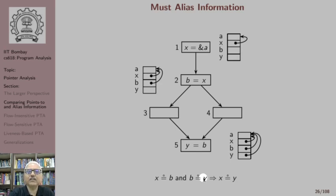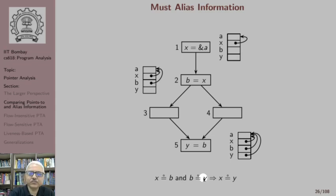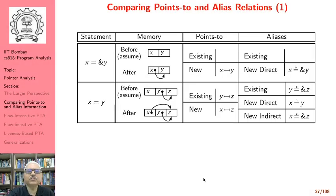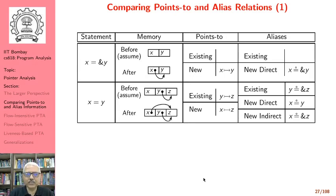The transitivity issue does not arise for points-to information regardless of whether it is must points-to or may points-to. Let us continue to compare points-to and alias relations by looking at memory graphs.